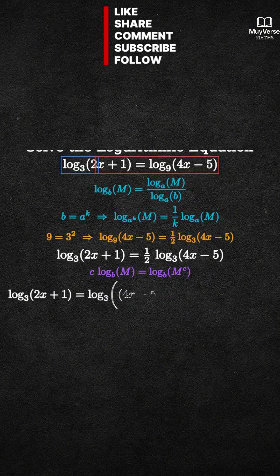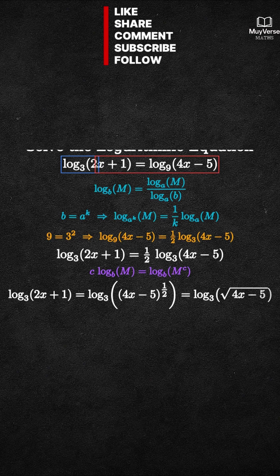Therefore the equation is: log base 3 of (2x plus 1) equals log base 3 of the square root of (4x minus 5).